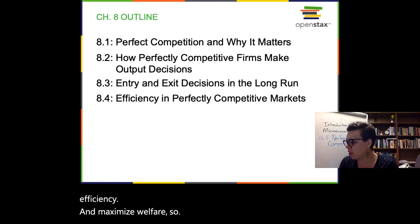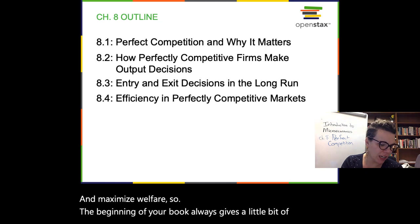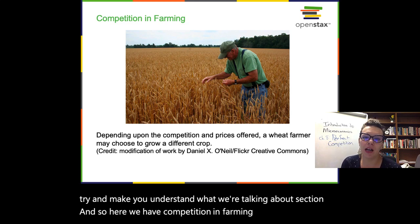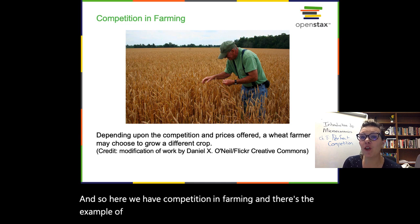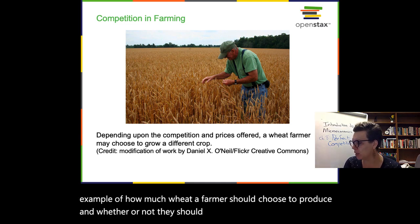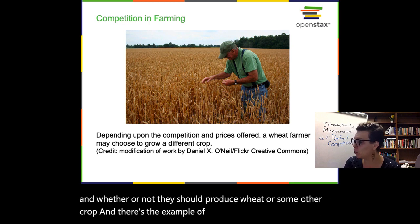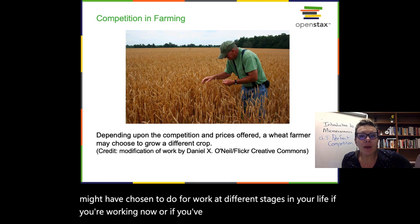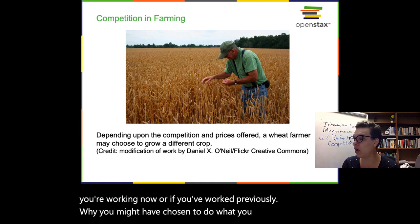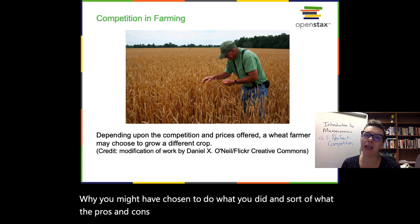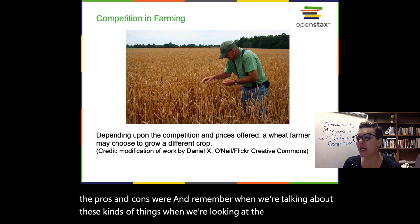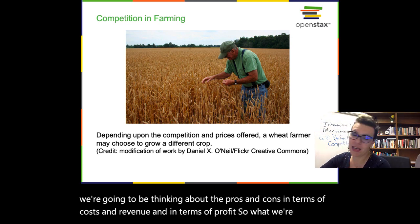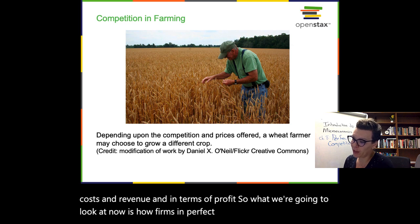The beginning of the book gives a context-setting example — competition in farming — looking at how much wheat a farmer should choose to produce, or whether they should produce some other crop. There's also the example of thinking about what you might have chosen to do for work. When looking at the firm's perspective, we think about pros and cons in terms of costs, revenue, and profit.